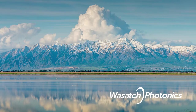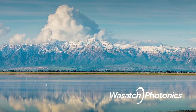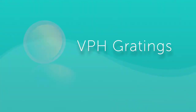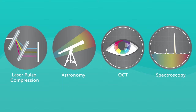Wasatch Photonics derives its name from the Wasatch Mountains in Utah in the western United States. This is where the volume holographic phase gratings are produced. These gratings can also be used for a variety of other applications, like laser short-pulse compression, spectral analysis, astronomy, optical coherence tomography — and of course spectroscopy, which brings me to my favorite: Raman spectroscopy.